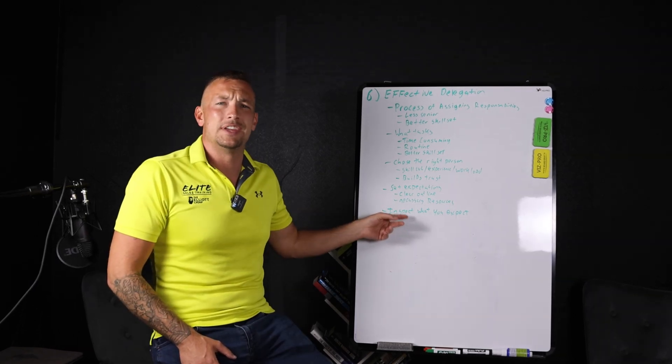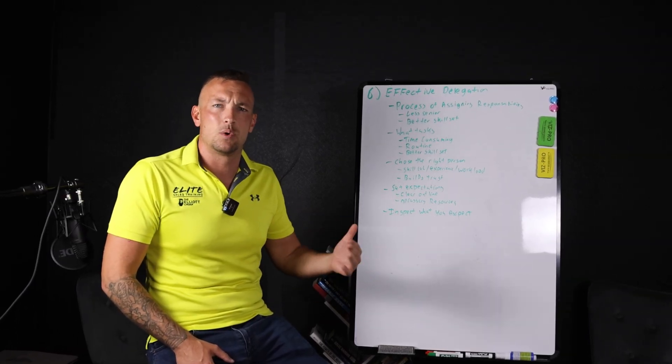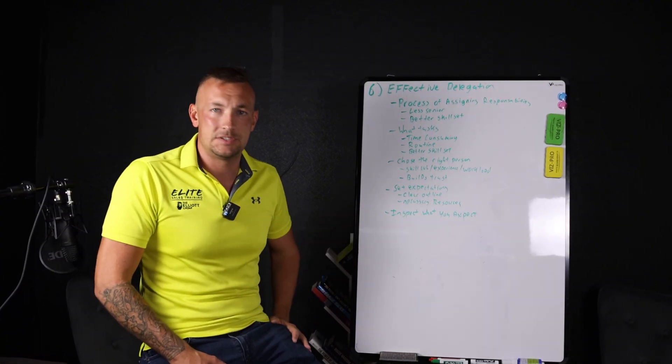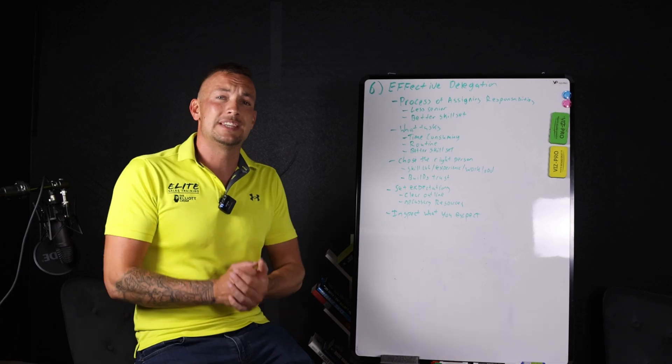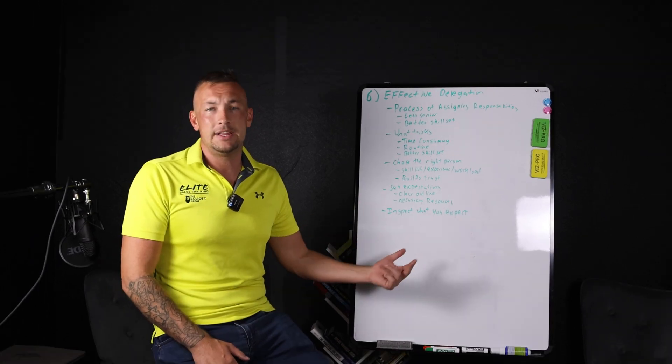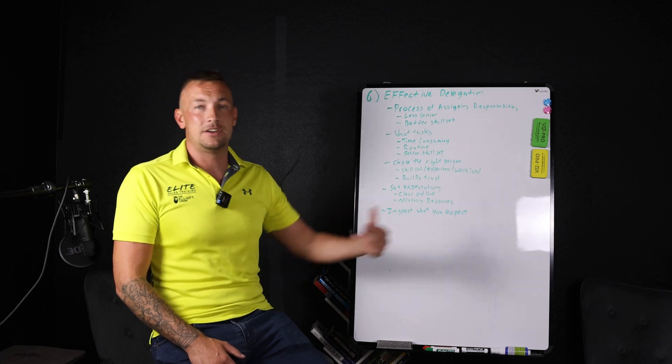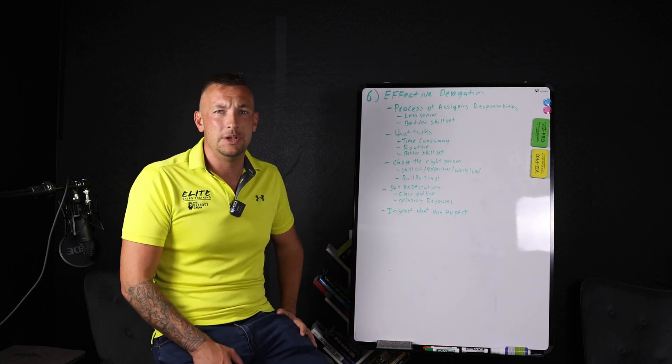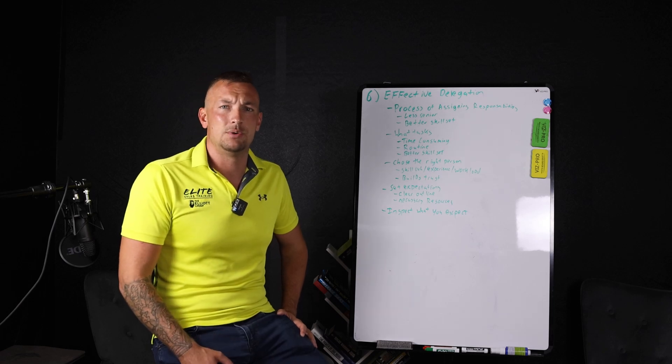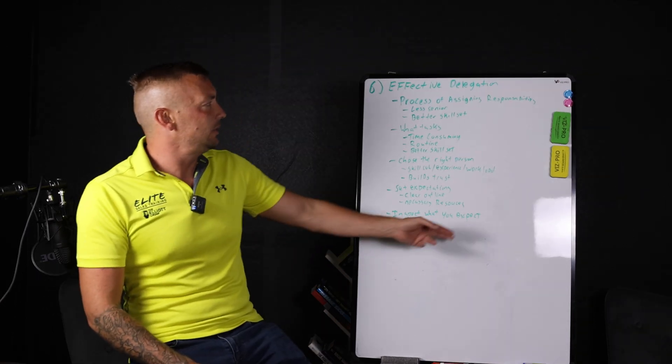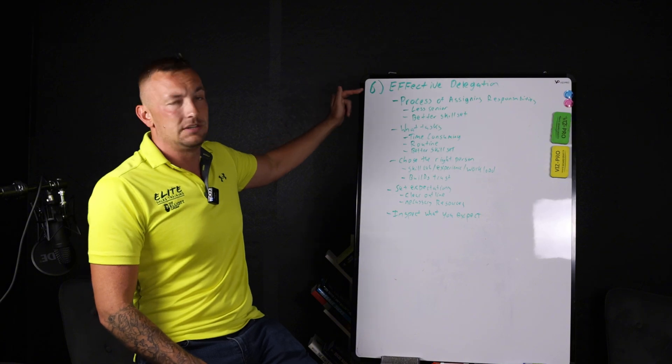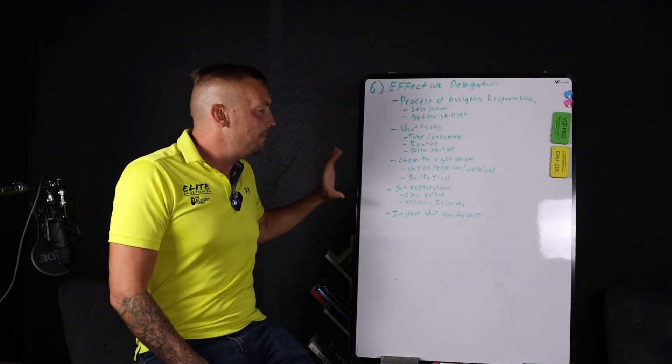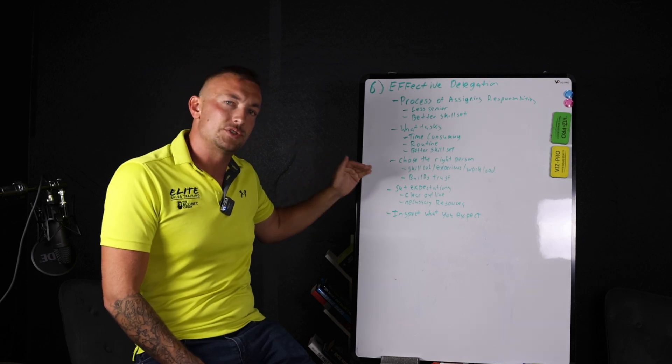And then the next thing is you have to inspect what you expect. And it goes back to eliminating tasks. If it's not worth inspecting, is it really even worth doing? Or does a human need to do it? Because you might be able to replace it with technology. When you delegate tasks, it doesn't just have to be human, it could be technology as well.